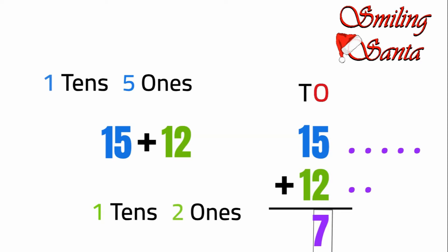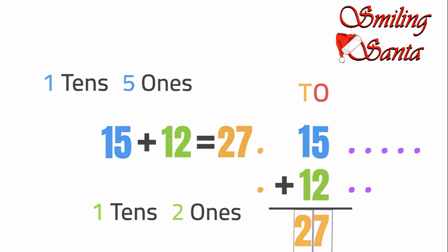Then we will add the tens. Now we will add the numbers in tens place. One and one are in tens place. Let's add them. We will put one dot — one. Then we will put one more dot — one. Count them together: one, two. As we are adding the numbers in the tens place, we will put the answer in the tens place. So 27 is our sum. The answer of 15 plus 12 is 27. This is how Mama and Amy solved the addition problem.